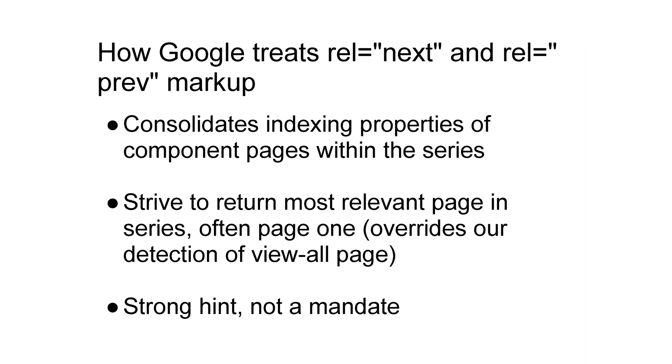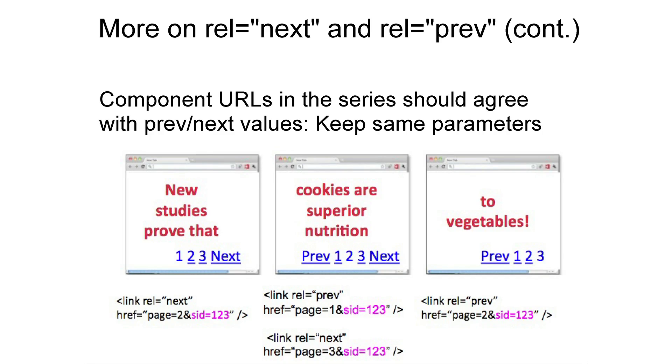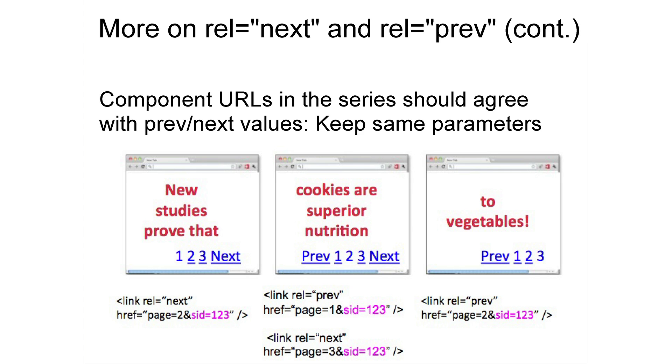Know that rel next and rel prev is a strong hint — it's not a mandate by any means. The last thing I want to say about rel next and rel prev is that component URLs in a series should be consistent with their parameters. Let's take the article "new studies prove that cookies are superior nutrition to vegetables." If these pages contain a session ID, all the values for rel prev and rel next should also contain the session ID. Our indexing team looks to link every page in the series with what was declared previous and what was declared next. So if you're on page two, the rel prev stating page one with sid equals a certain value — they'll go to that URL, and that URL has to list page two with the same session ID. That's how we can link every page in the sequence. Be sure to keep parameters consistent throughout your entire series.